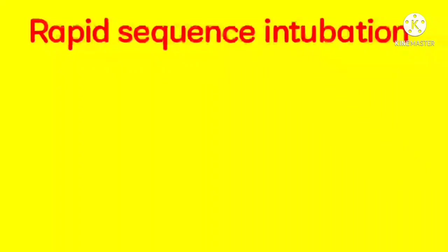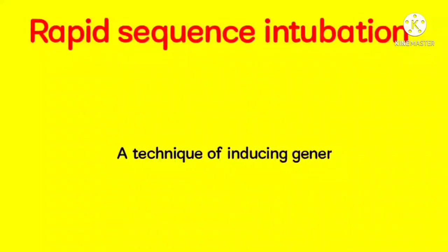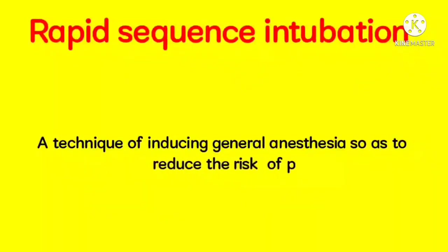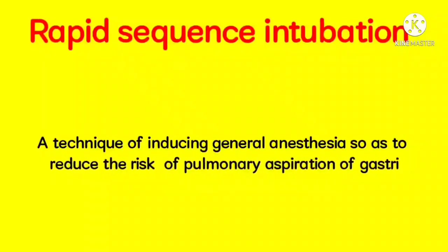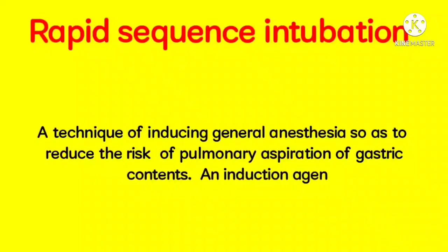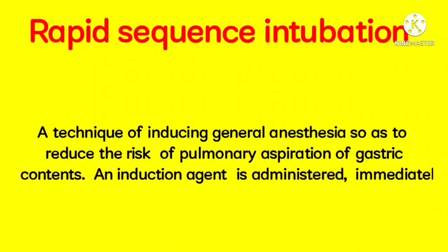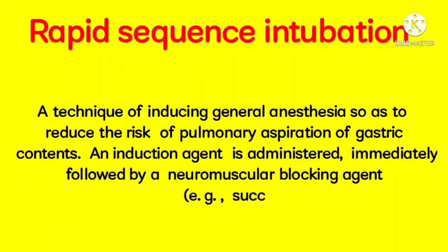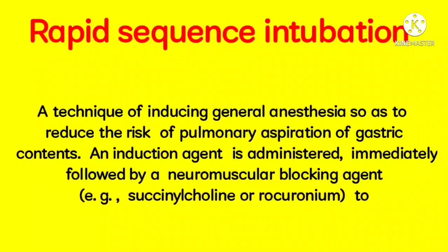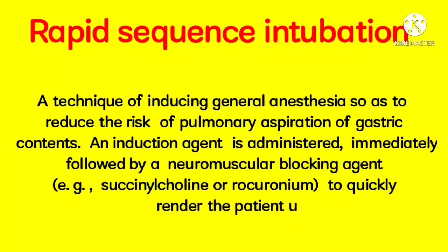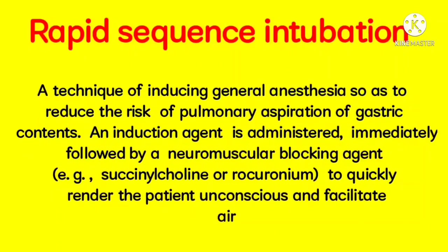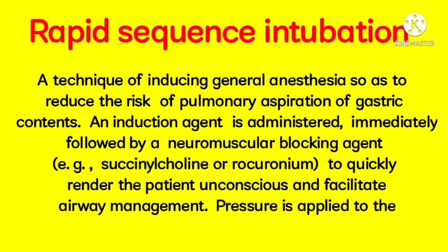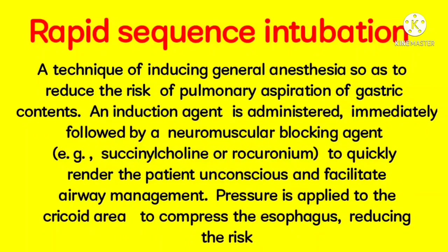Rapid Sequence Intubation is a technique of inducing general anesthesia so as to reduce the risk of pulmonary aspiration of gastric contents. An induction agent is administered, immediately followed by a neuromuscular blocking agent, e.g. succinylcholine or rocuronium, to quickly render the patient unconscious and facilitate airway management. Pressure is applied to the cricoid area to compress the esophagus, reducing the risk of regurgitation.